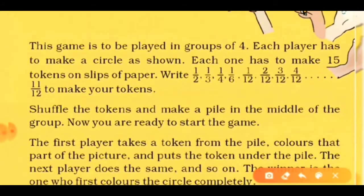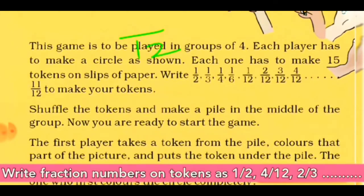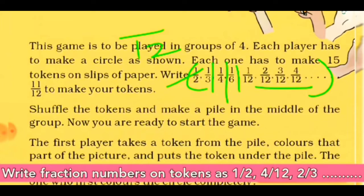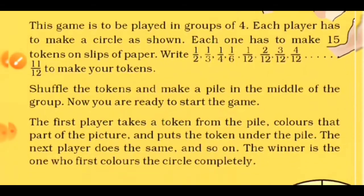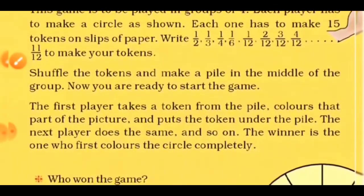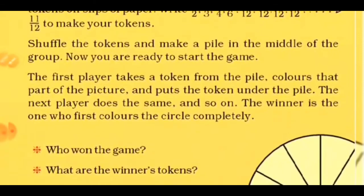You will write some fraction numbers whose denominator should be only 12 — not more than 12. For example: 1/2, 1/3, 1/4, 1/6, 1/12, and others. You write all of these on tokens, then mix all the tokens. The first player will pick out one token and read the fraction number, then start to color that portion.